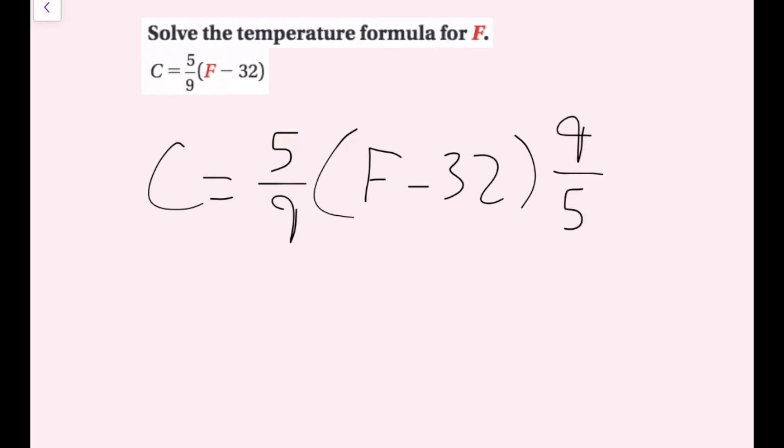And remember, the order of multiplication does not matter. So if I put the nine-fifths over here, even though there's this F minus 32 quantity in between, these are still going to cancel out. So the nines cancel, the fives cancel. So on the right side, all I have left is F minus 32. And you can take it out of the parentheses if you would like. You can leave them in there if you want, but that's probably going to confuse you if you aren't really sure. And then on the left side, I have nine-fifths C.